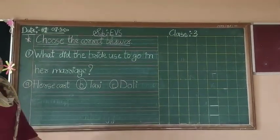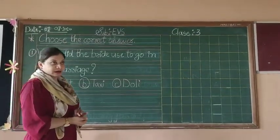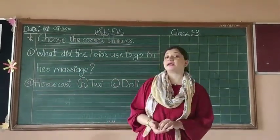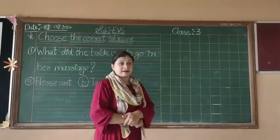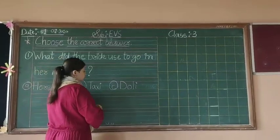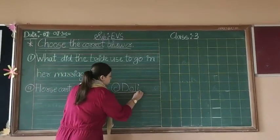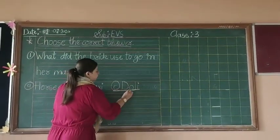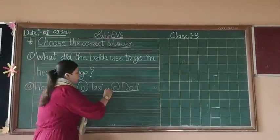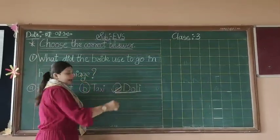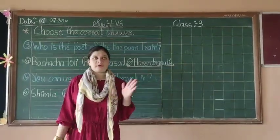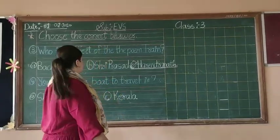Tell me which is the correct option. We read in the chapter that the bride goes in a doli — there was also a picture of it. So the correct answer is doli. You have to underline the word 'doli,' or you can put a tick mark on that option.